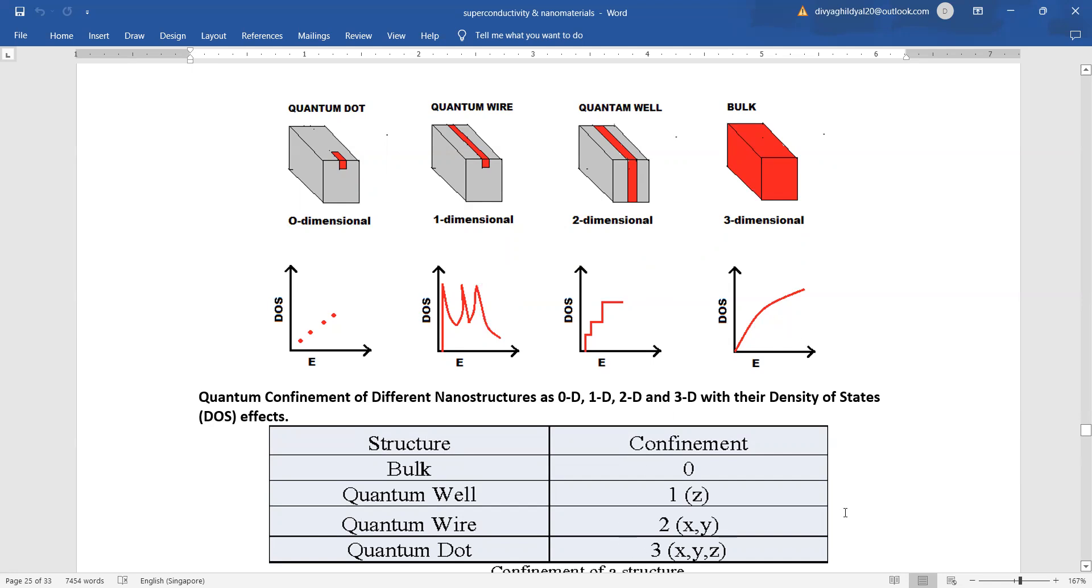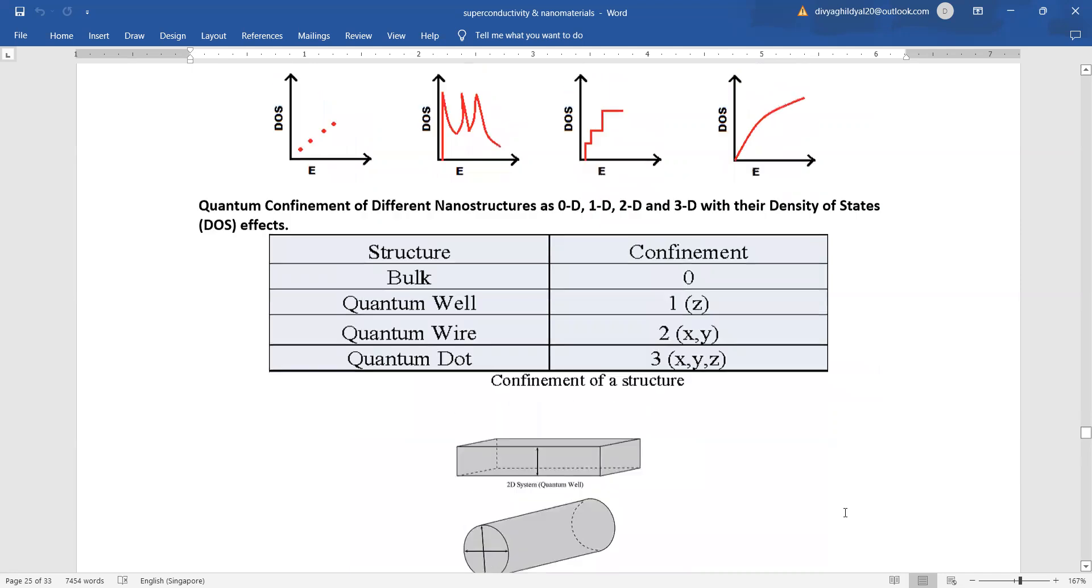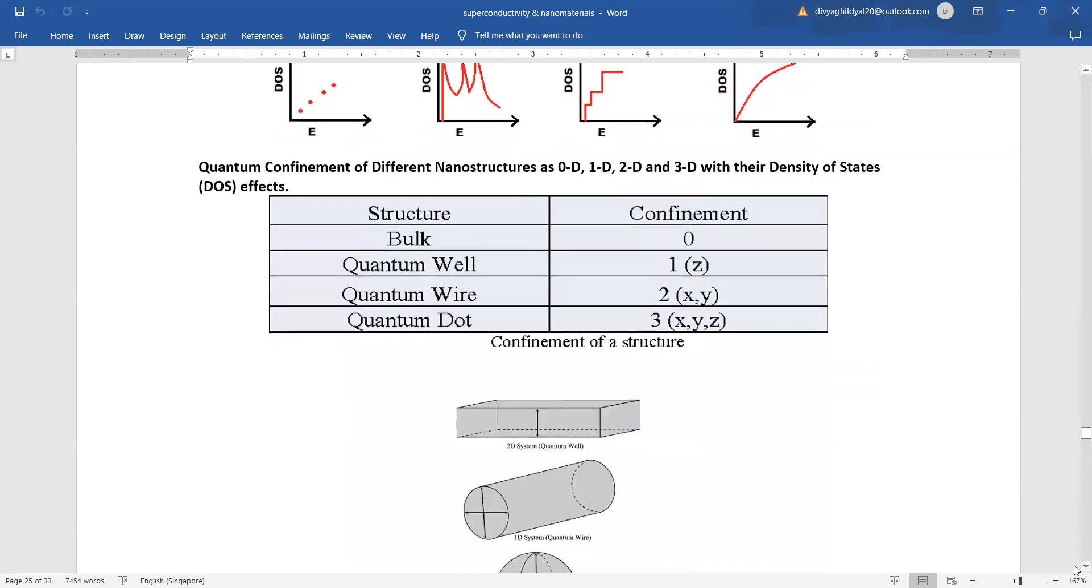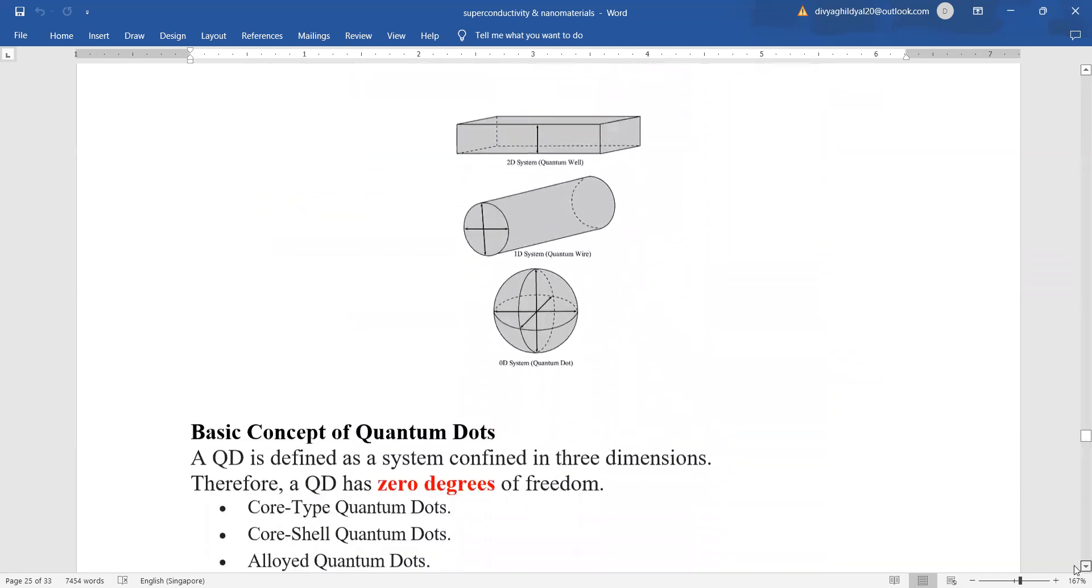So, this is how we are getting these quantum structures of well, wire and dot.